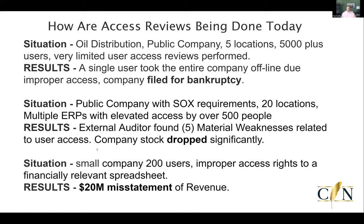Even in smaller companies, I've seen within a public company that had 20 locations and 500-plus employees, their external audit had to perform audits and assessments at least annually. One of the big problems they had was with their elevated access. Since they had multiple ERPs in multiple locations, those ERPs were not being reviewed across each of the divisions, and multiple individuals would have elevated or improper access within those ERPs. The external auditor determined they had five material weaknesses — the worst kind of findings an external auditor can have.